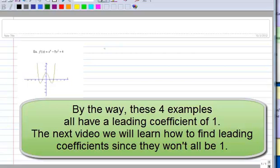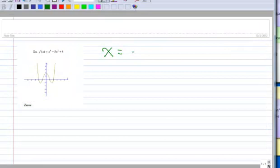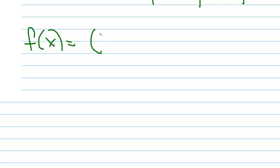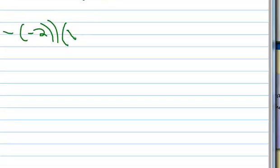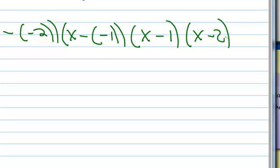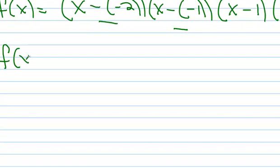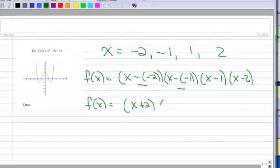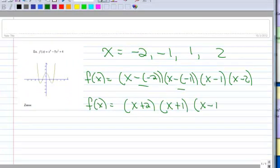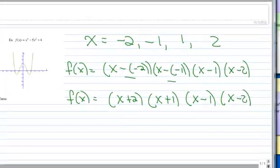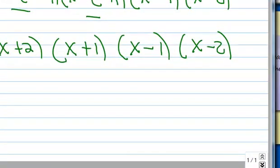Here's a fourth degree polynomial — watch how fast we factor this one. We have zeros at negative 2, negative 1, 1, and 2. It's also an even polynomial. Let's make its fully factored form: x minus the zero, four times. Cleaning up: x plus 2, times x plus 1, times x minus 1, times x minus 2. That is for sure the fastest you have ever factored a fourth degree polynomial.